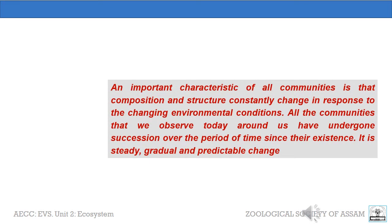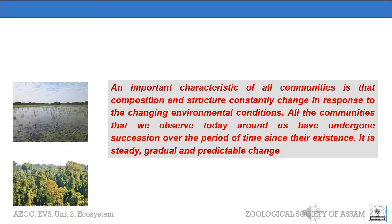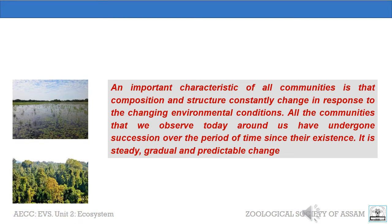An important characteristic of all communities is that composition and structure constantly changes in response to the changing environmental condition. So there is an orderly progressive replacement of one community by another until a stable community occupies the area. This is called Ecological Succession, which you must have already studied in your previous section. All the communities that we observe today around us have undergone succession over the period of time since their existence.